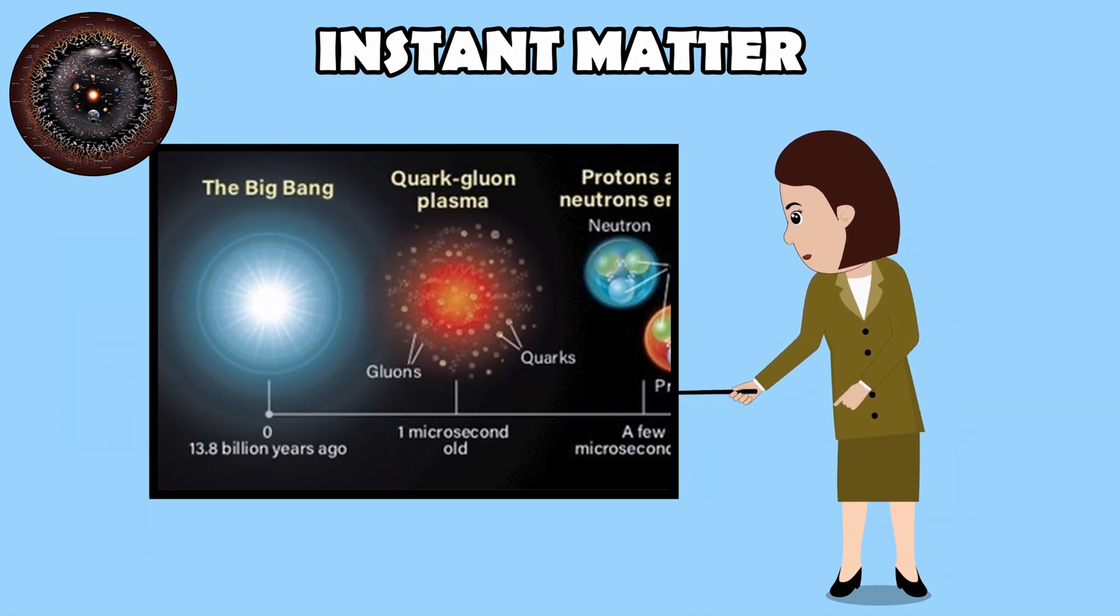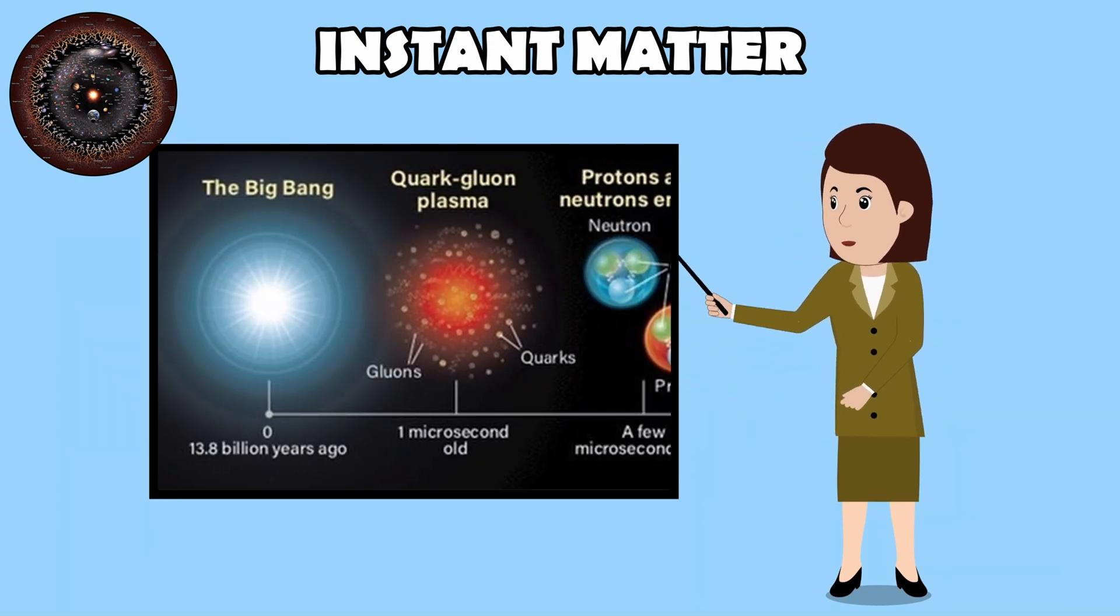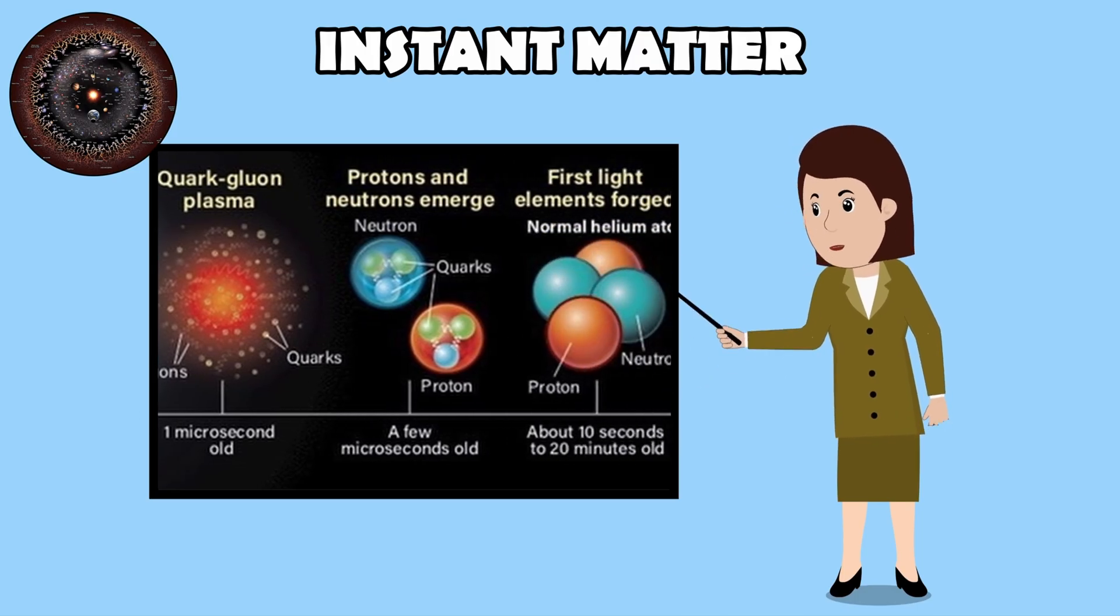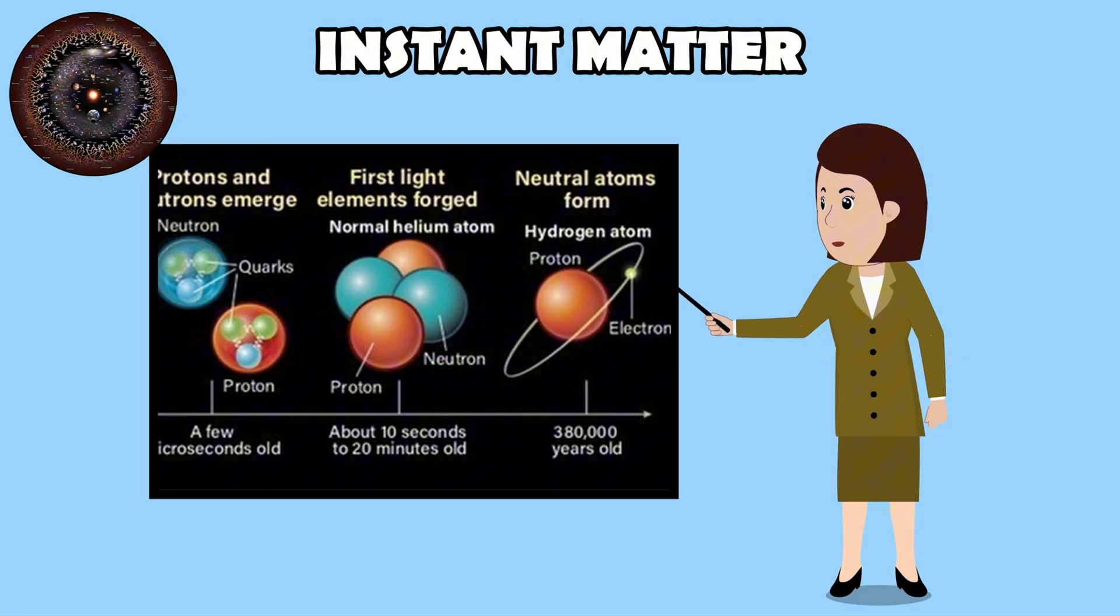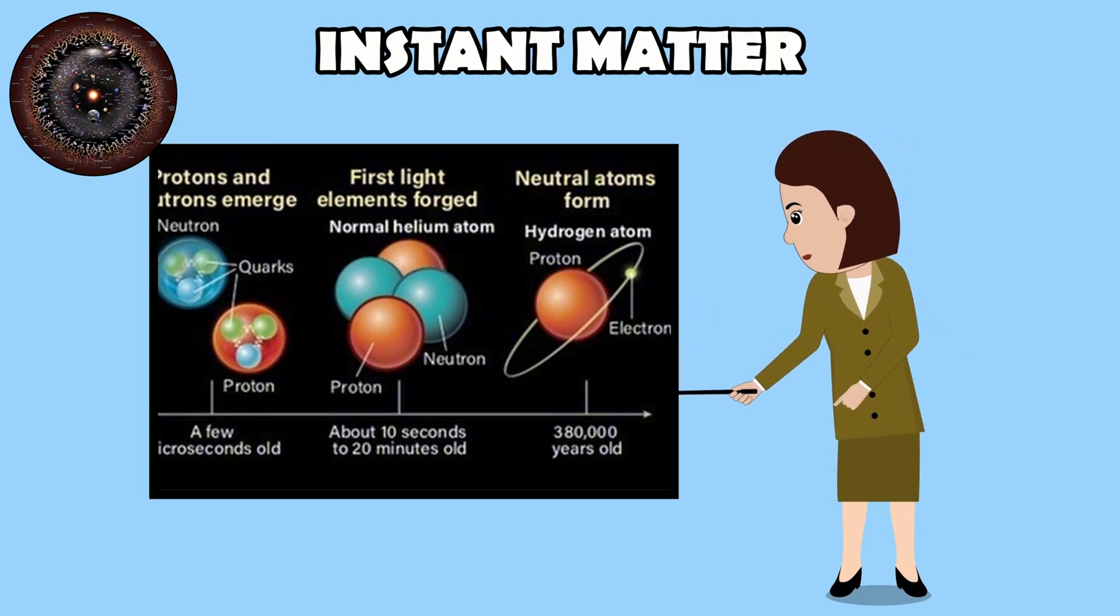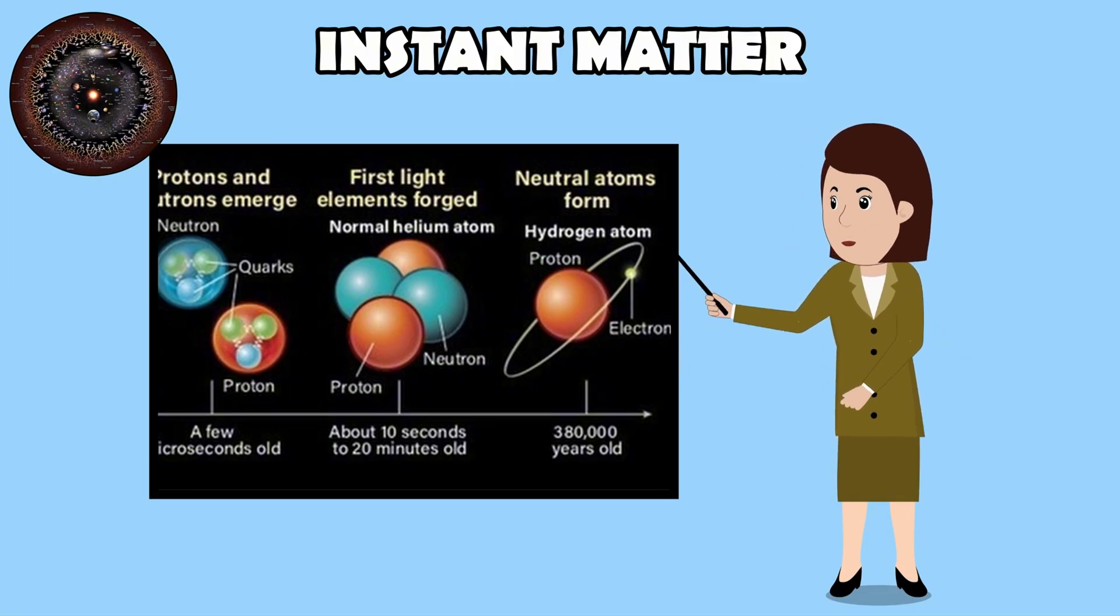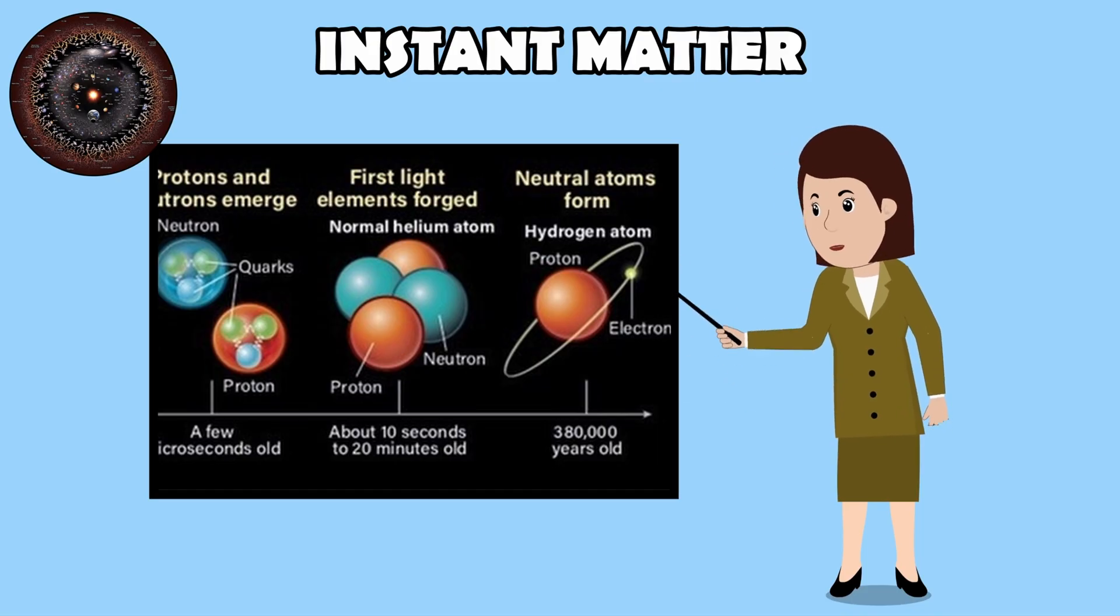So matter did not appear in one instant. It unfolded step by step, energy turning into particles, particles assembling into nuclei, and finally atoms forming once the universe was cool enough. The story of matter is not a single spark, but a long chain of transformations.